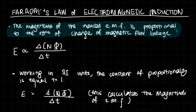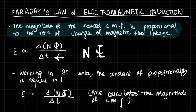Faraday's law of electromagnetic induction tells us that the magnitude of the induced EMF is proportional to the rate of change of magnetic flux linkage. In other words, E, which denotes the magnitude of the induced EMF, is proportional to ΔNΦ/Δt. This tells us it's the rate of change because it's with respect to time. Phi is the magnetic flux that enters a wire, and N is the number of turns in the coil.